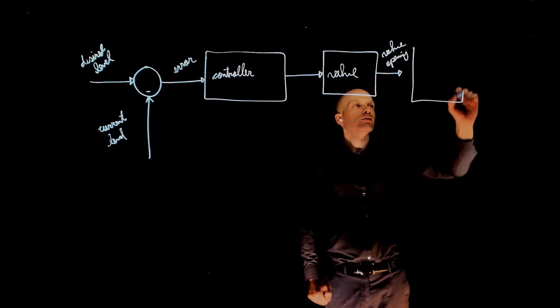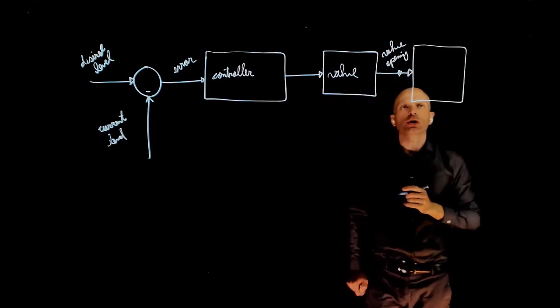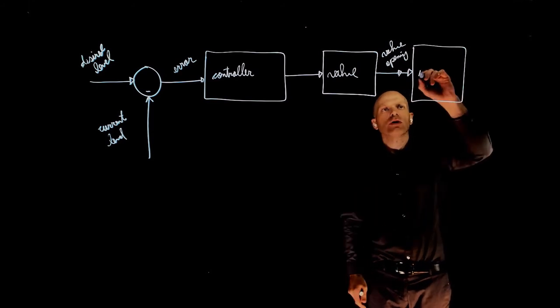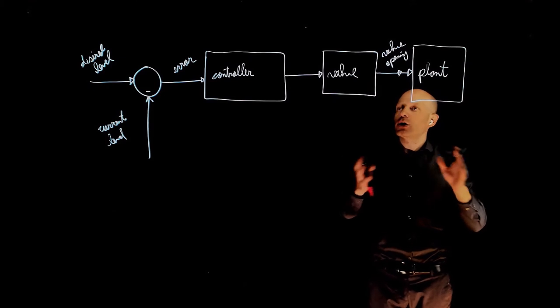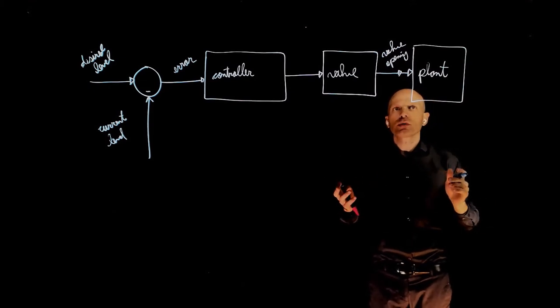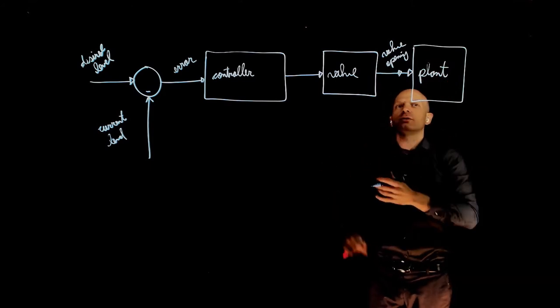And this is now given to the plant. The plant is the system we are controlling. And this system, I'm going to call here plant, has all the dynamics of the water system. This is the representation of the physical system that we are controlling.